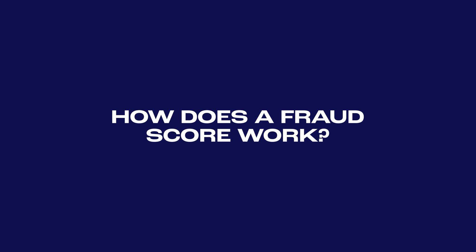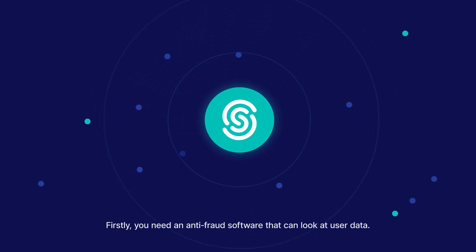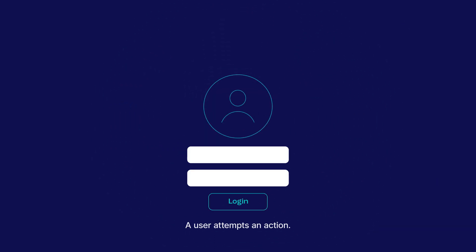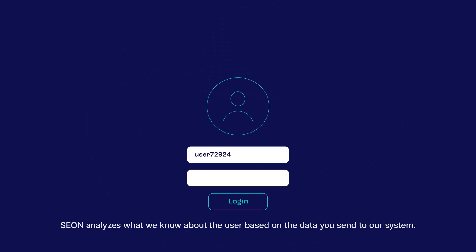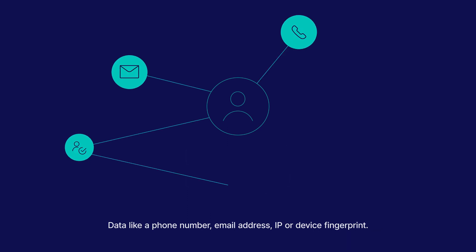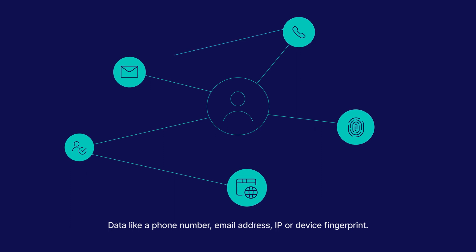So, how does a fraud score work? Firstly, you need anti-fraud software that can look at user data. A user attempts an action. Sion analyzes what we know about the user based on the data you send to our system — data like a phone number, email address, IP, or device fingerprint.